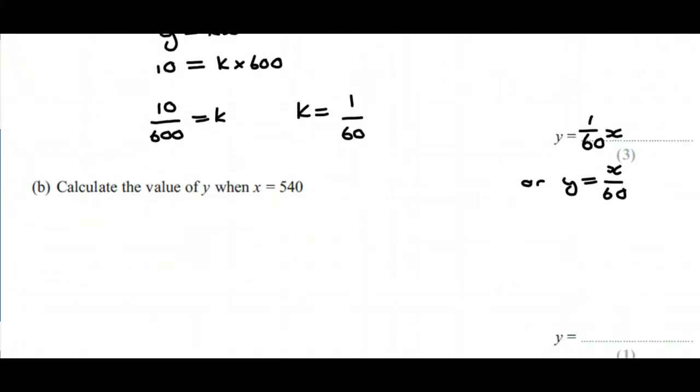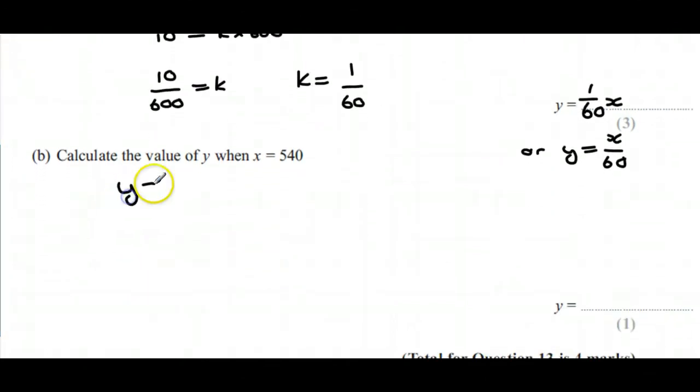We can now use that formula, y equals x over 60, to help us calculate the value of y when x is 540. So y will be, if we replace our x with 540, and you'll see that that cancels down to give you 9. So in this case, y is 9.